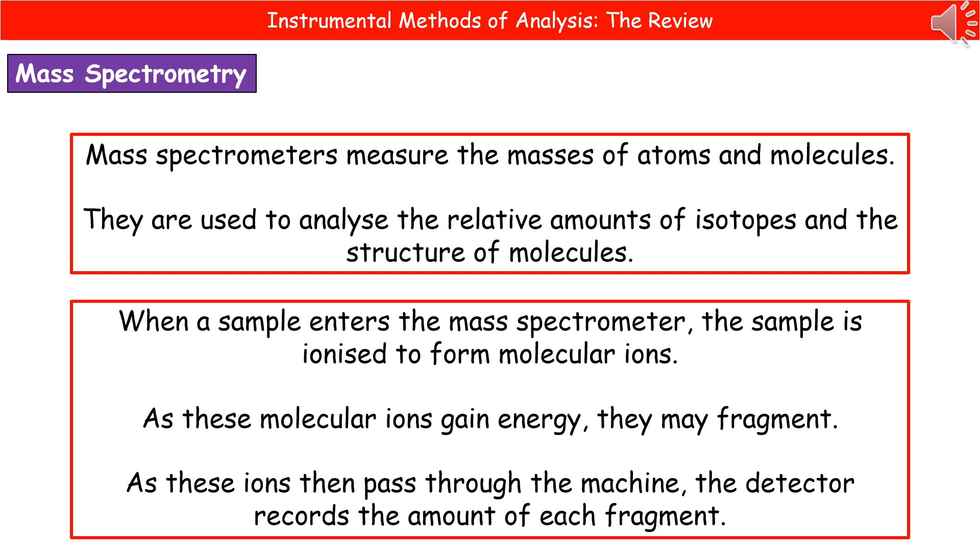The way in which this works is that a sample will enter the mass spectrometer and be ionized to form things called molecular ions. As these molecular ions gain energy, then it can cause them to fragment, so break into small pieces. Then those ions are going to pass through the machine, and a detector is going to record the amount of each fragment that's present.